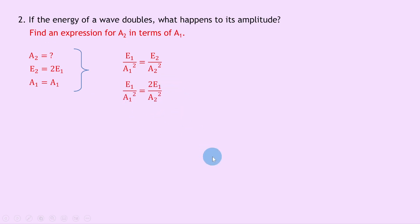And now we can cancel the E₁ terms on both sides because we've got one here and one here. So if we do that, we end up with one over A₁ squared is equal to two over A₂ squared. And remember, we want an expression for A₂ in terms of A₁, so let's just cross multiply here.